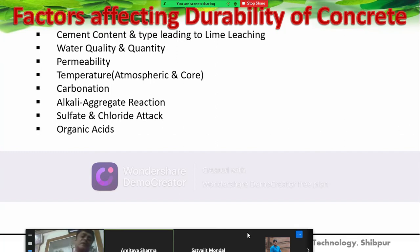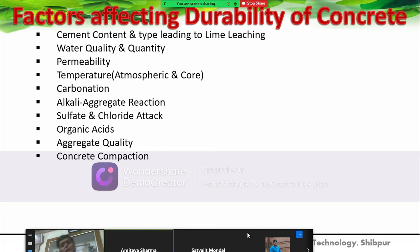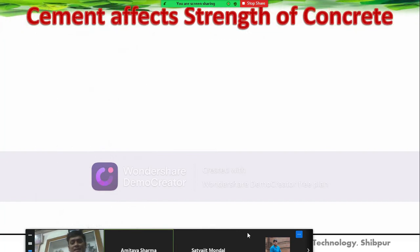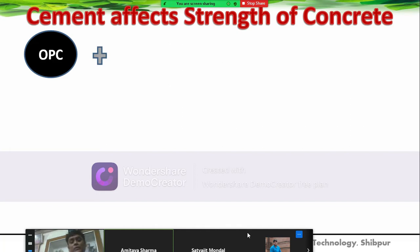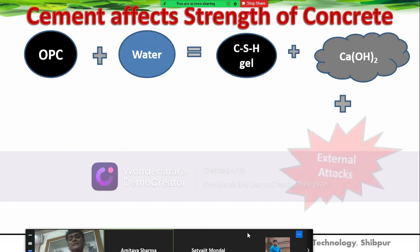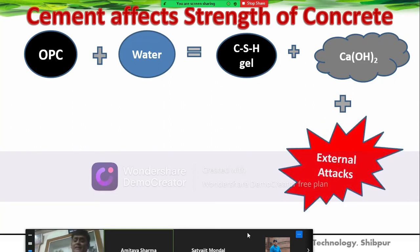Organic acids also affect durability. Aggregate quality is important—if the aggregate reacts with the alkali, the concrete becomes non-durable. Concrete compaction: if you do not compact concrete well during casting it will affect durability. Curing: if you do not water the concrete for up to seven days from the time of casting, it will affect durability. Moisture in the atmosphere and in the concrete affects durability. Abrasion, wetting and drying cycles, and in colder countries, freezing and thawing also affect durability. OPC (Ordinary Portland Cement) plus water gives CSH gel—calcium silicate hydrate gel—a complex compound that gives strength to concrete, plus calcium hydroxide which is the most problematic compound as it reacts with external chemicals like chloride and sulfate and deteriorates the concrete.